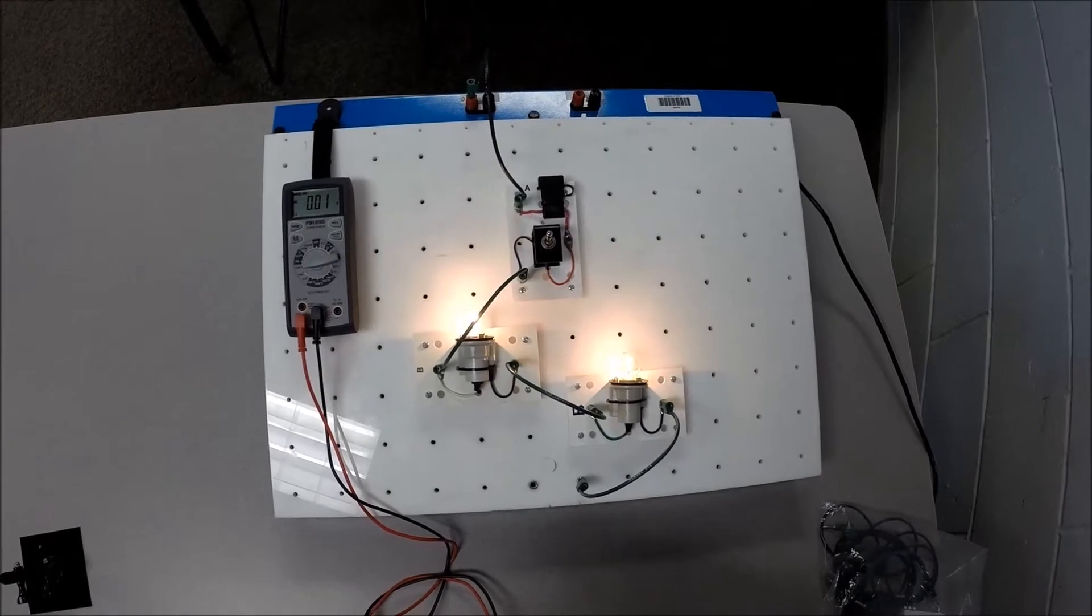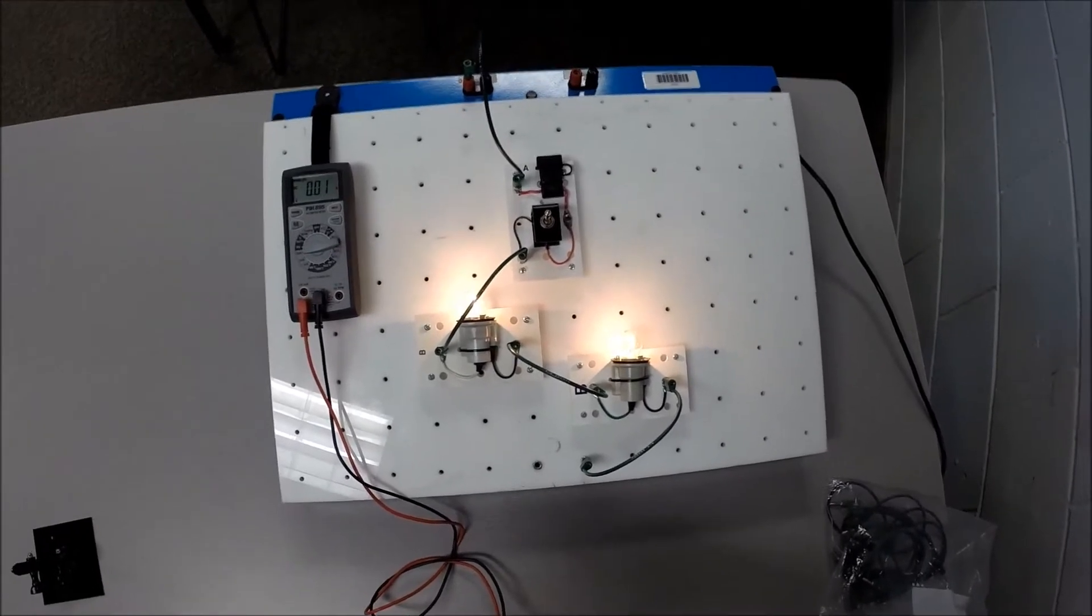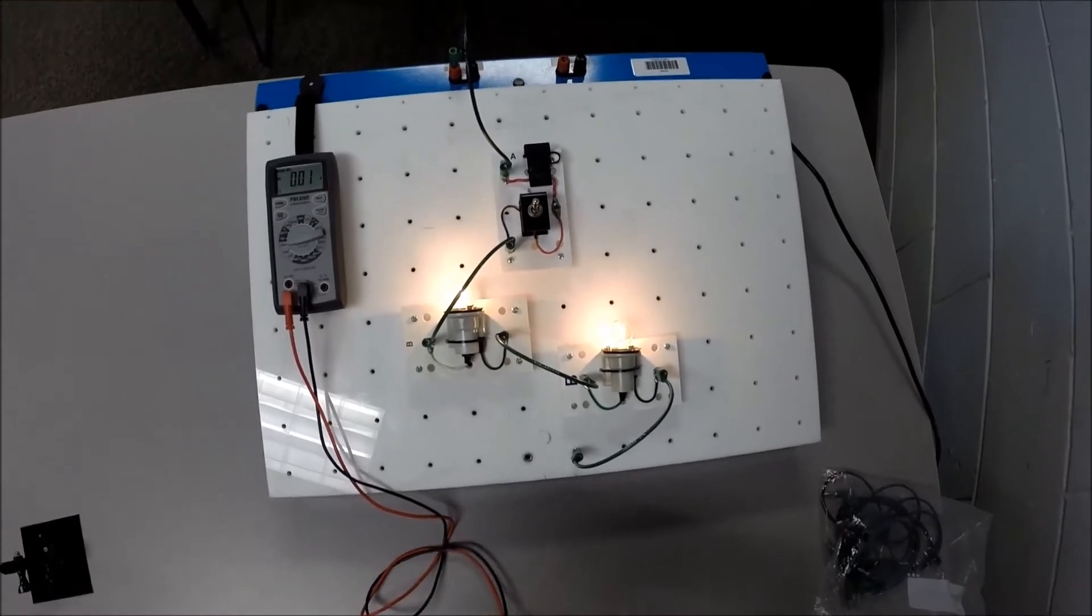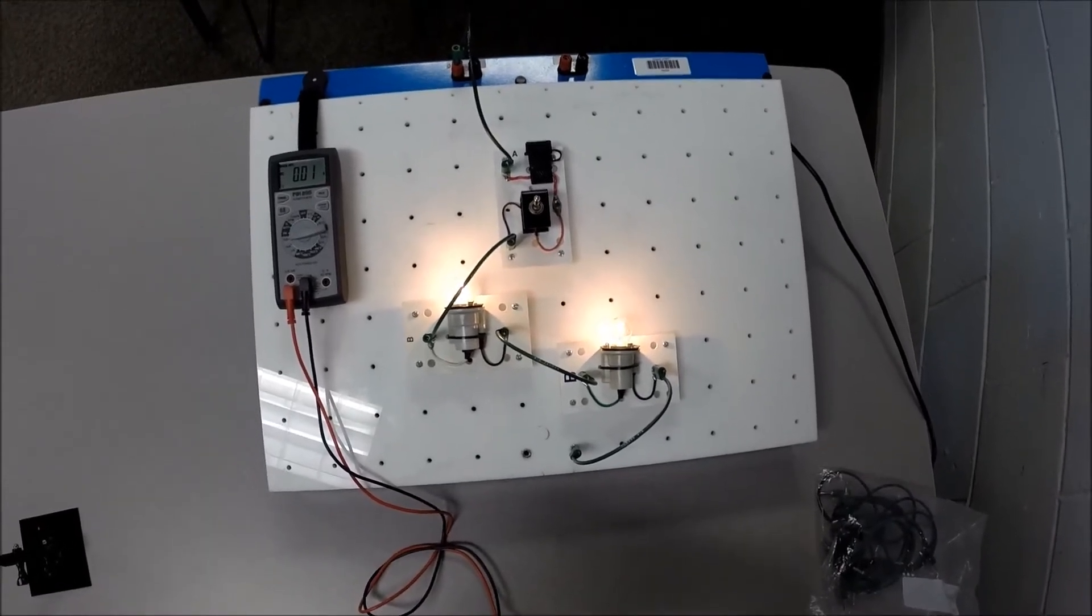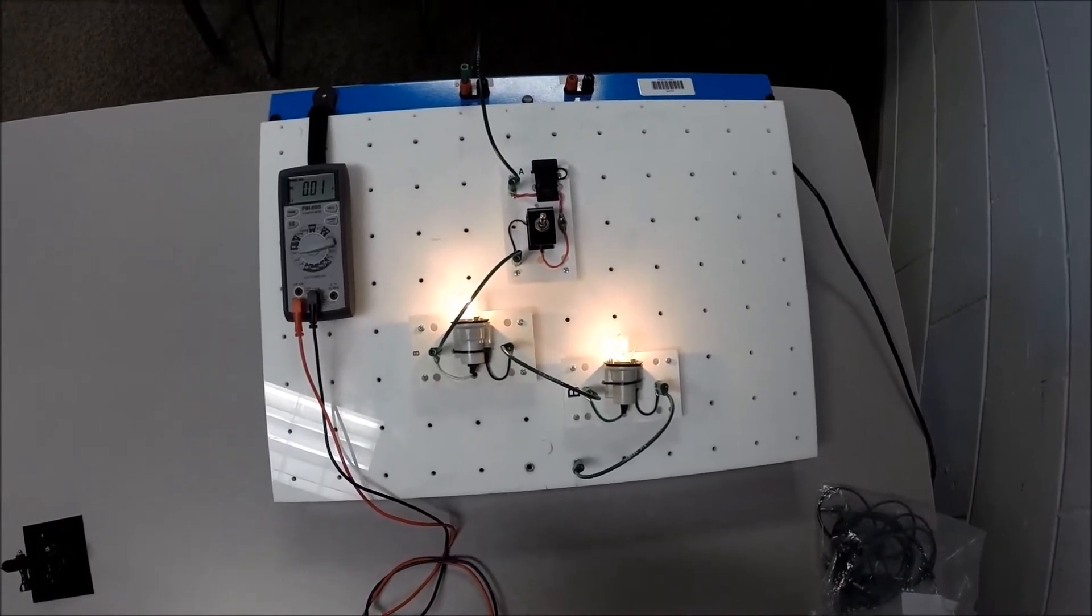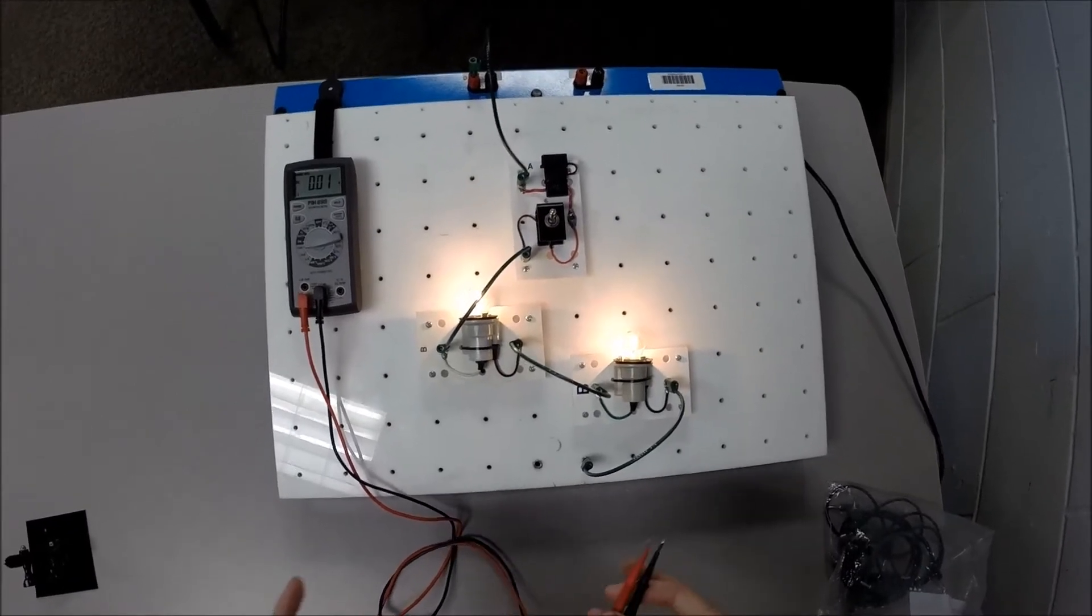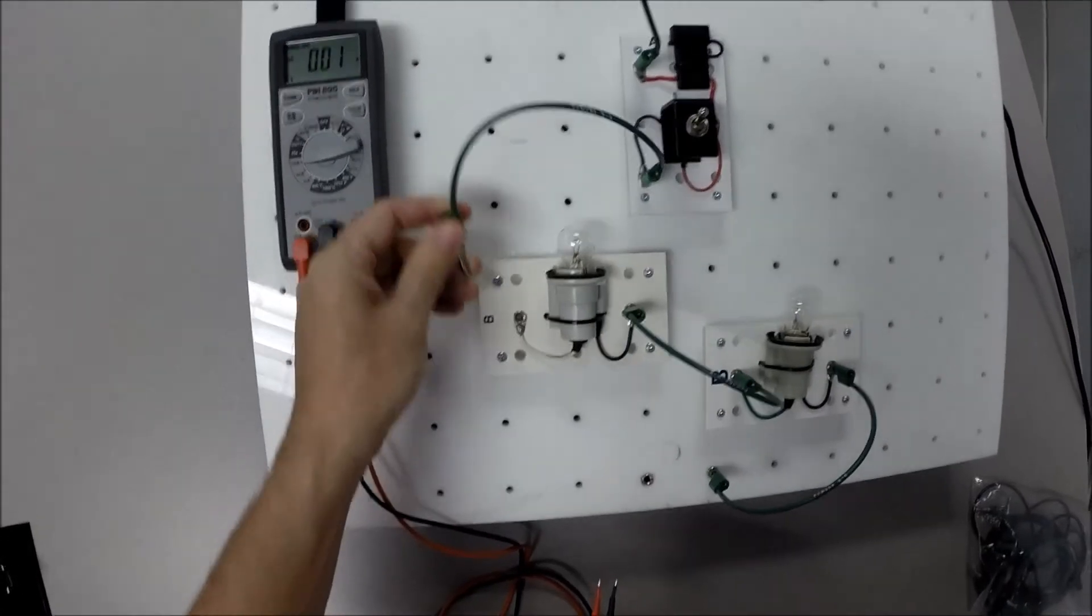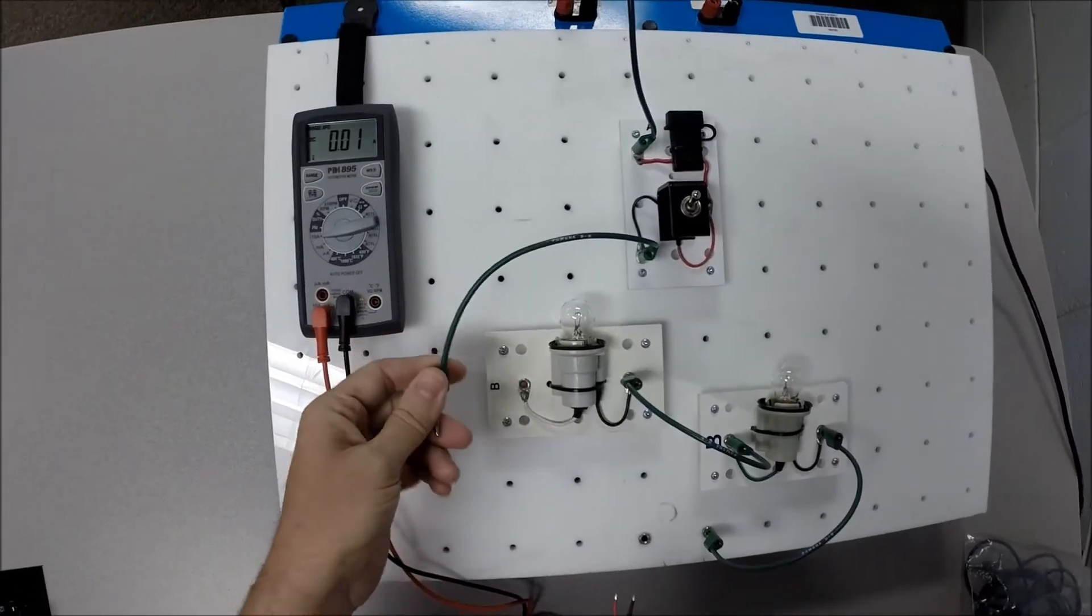So, what we're going to do is we are going to disconnect the circuit somewhere. And we can disconnect the circuit anywhere. It doesn't matter where we disconnect the circuit, because in a series circuit, the current is the same everywhere. So, just for the heck of it, I'm going to disconnect the circuit right here. So, at this point, going into the first bulb.